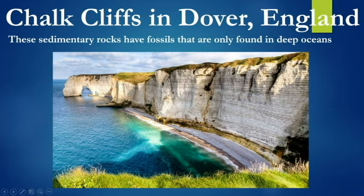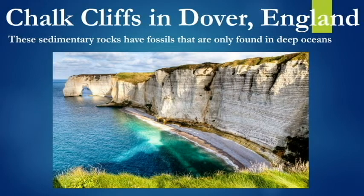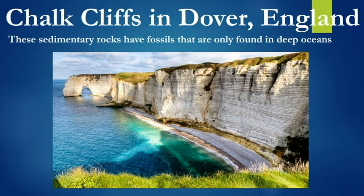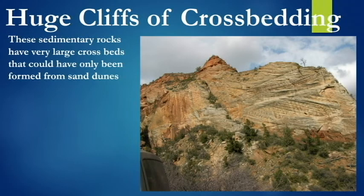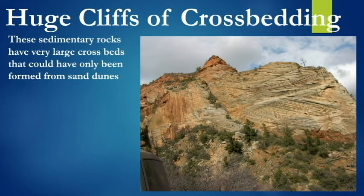These are the really famous chalk cliffs of Dover — they're featured in movies all the time, a really beautiful place. These huge cliffs are made up of tiny microorganisms that were deposited in a deep ocean environment. This is not in the deep ocean now — it's above the water — but the rocks themselves are evidence that this all used to be underwater, deep under the water a long time ago. The present is the key to the past. This really famous rock formation — these are huge cross beds, huge cliffs of cross beds — they're evidence of sand dunes, that this area used to be covered in a large desert with lots of sand. That's no longer there, but the evidence of that is still in the rocks.